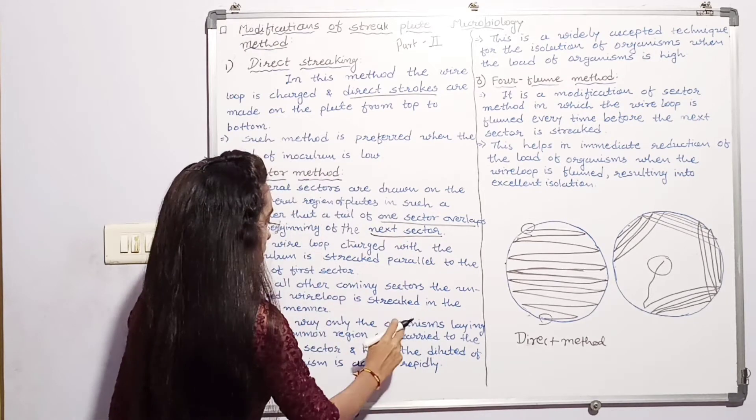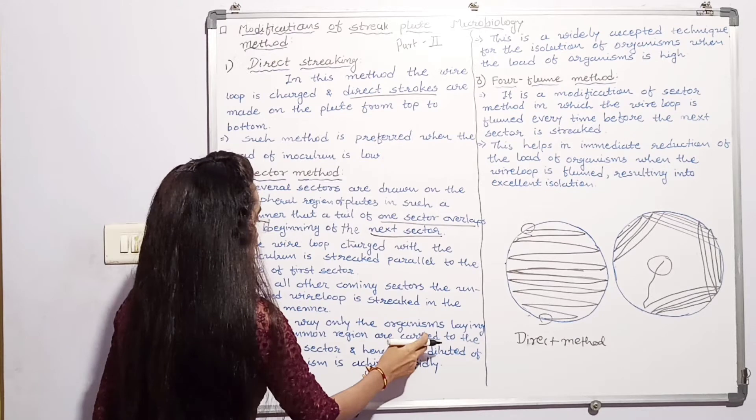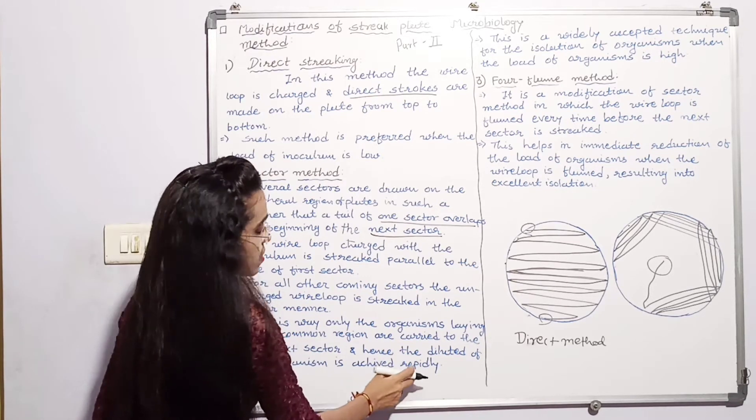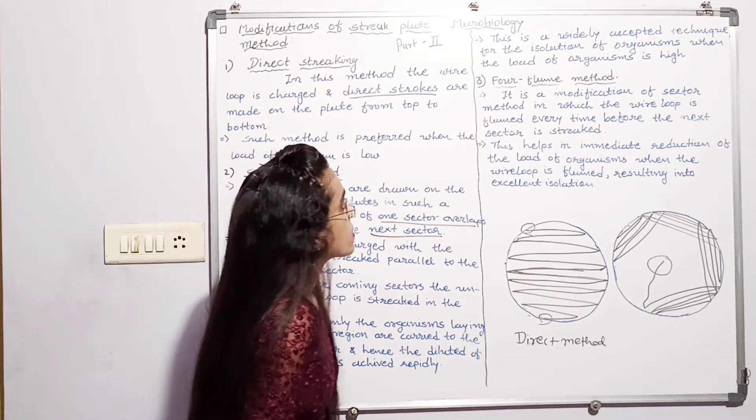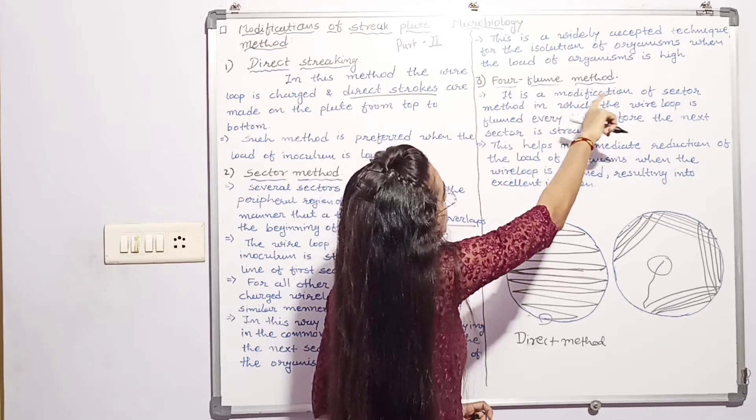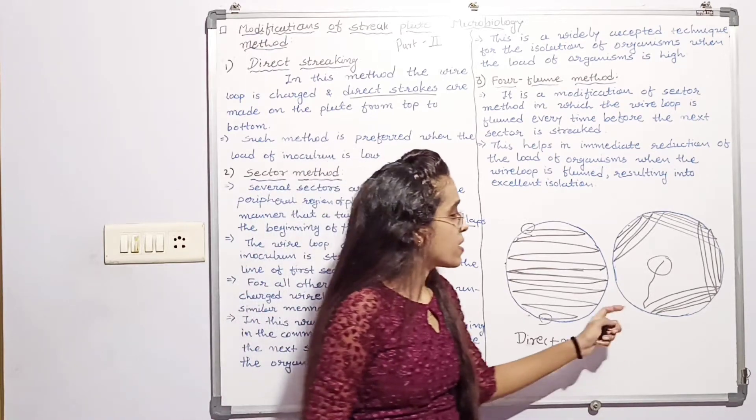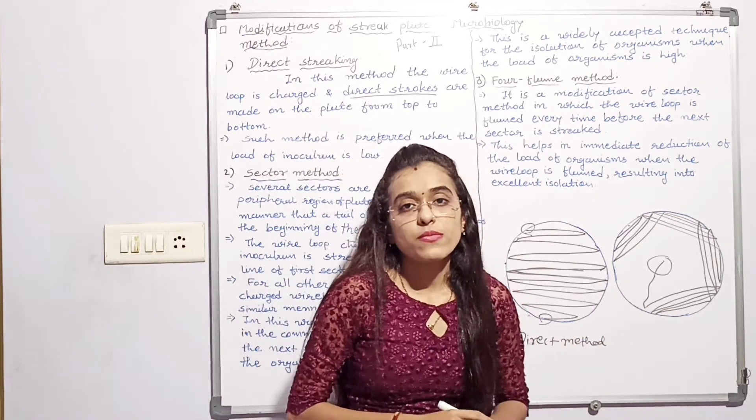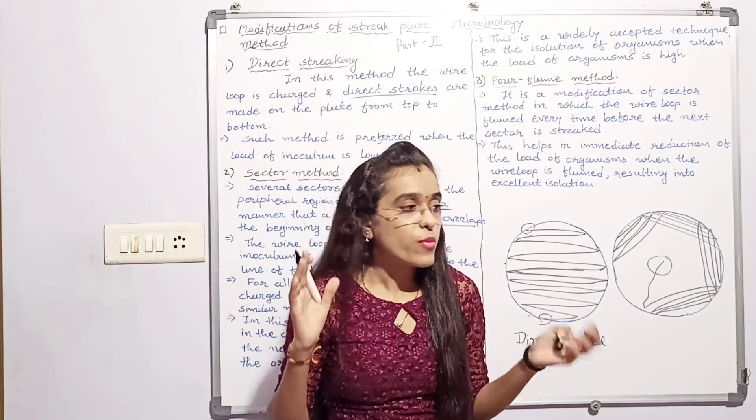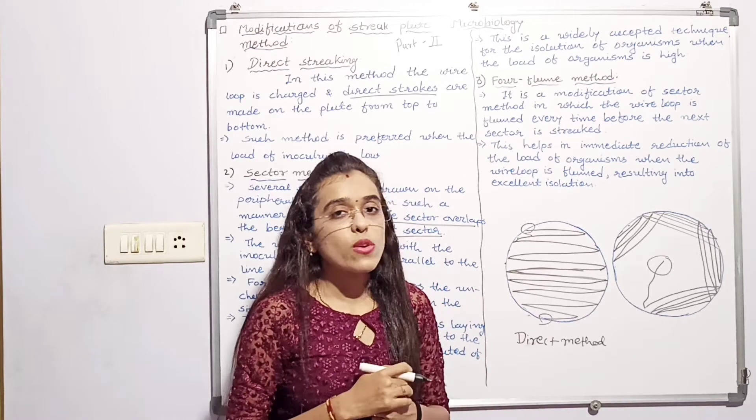In this way, only the organisms laying in the common region are carried to the next sector and hence the dilution of the organism is achieved rapidly. This is widely accepted technique for isolation of organism when the load of organism is high. This method can be used when organism is in multiple amounts, bulk means very large organism. If bacterial culture has many organisms, then we need to isolate.